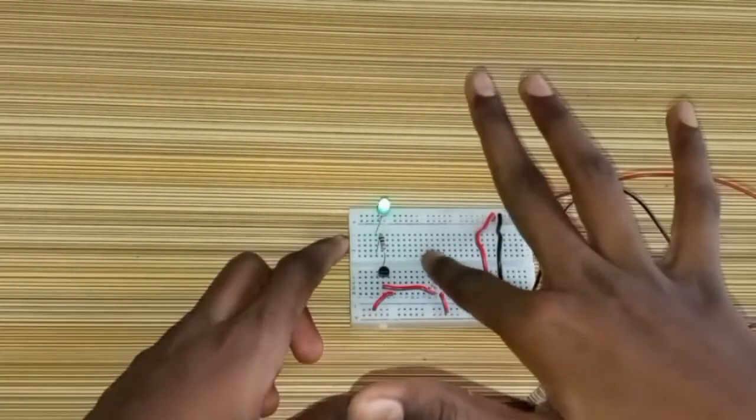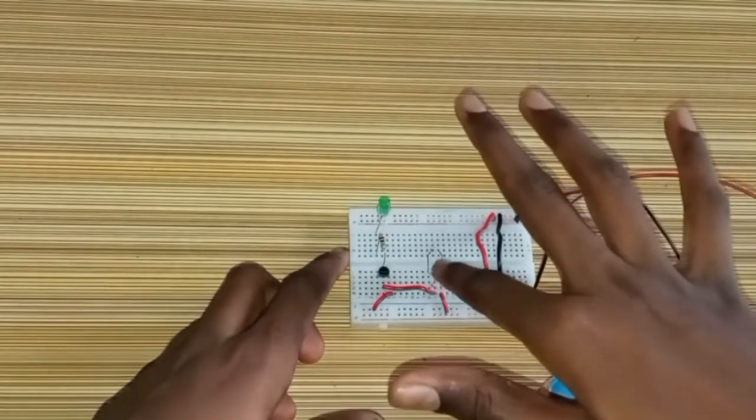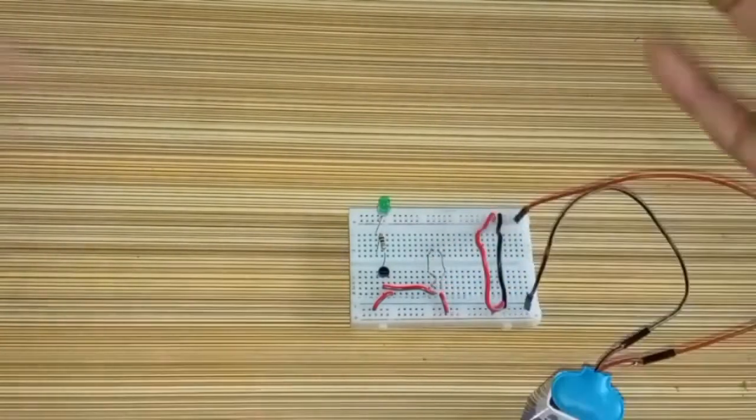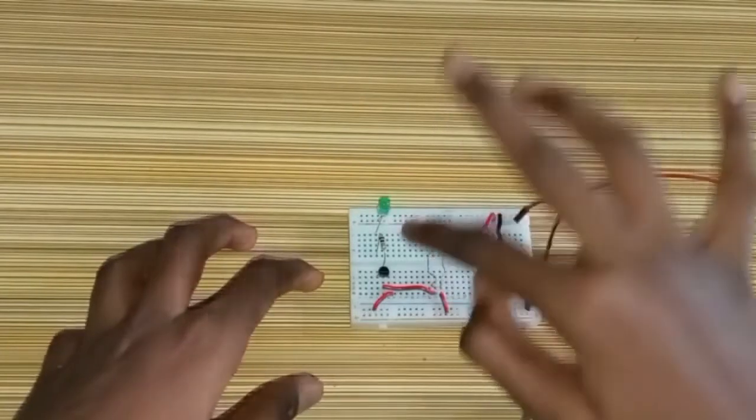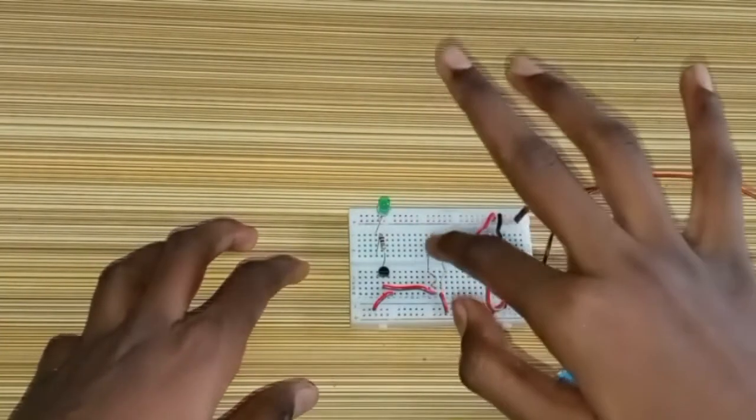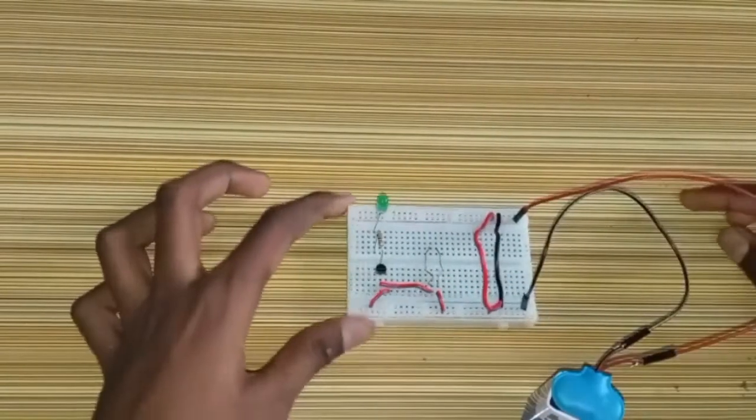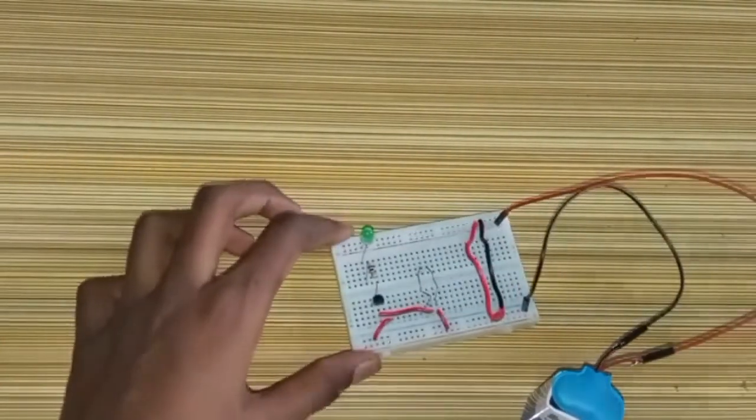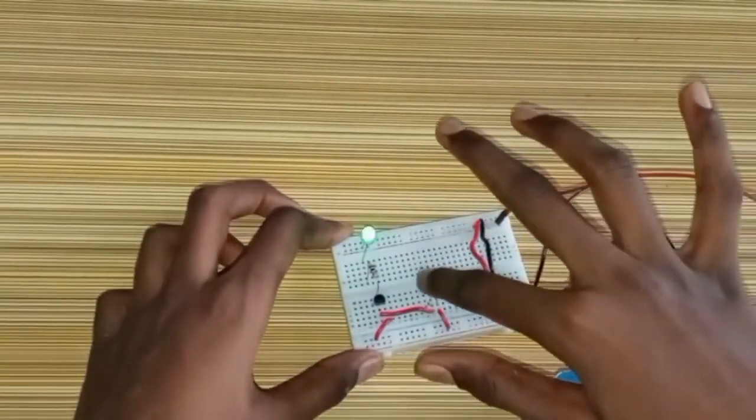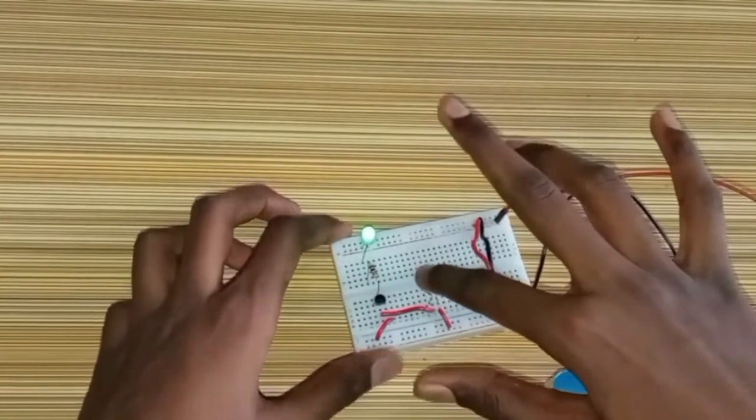Now when we touch the non-insulated wire with our hands, the light glows. When we take our hands away from the non-insulated wire, it does not glow. So this is our project. Thank you for watching.